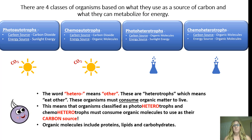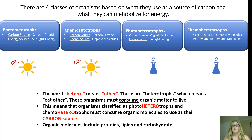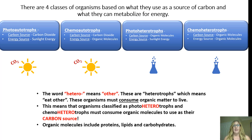The word hetero means other — heterotrophs consume organic matter in order to live. Photoheterotrophs and chemoheterotrophs must consume organic molecules for their carbon source. When we talk about organic molecules, we're referring to proteins, lipids, and carbohydrates.